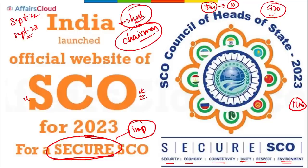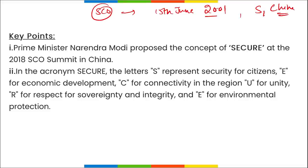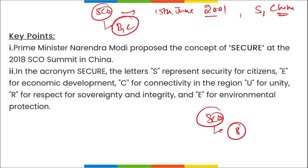Remember that Prime Minister Narendra Modi proposed the concept of SECURE at the 2018 SCO Summit held in China. The SCO was established on 15th June 2001 in Shanghai, China, and its headquarters is in Beijing, China. The SCO has eight member states: China, Kyrgyzstan, Kazakhstan, Russia, Tajikistan, and Uzbekistan - and in 2017, Pakistan and India also became full members.